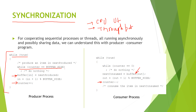The producer checks whether the bucket is full. If it is full, it will do nothing and will not produce anything. If it is not full, it will produce one good and place it in the bucket — the buffer. Then it will increase the counter by one. So if one good is placed, the counter is incremented to one.